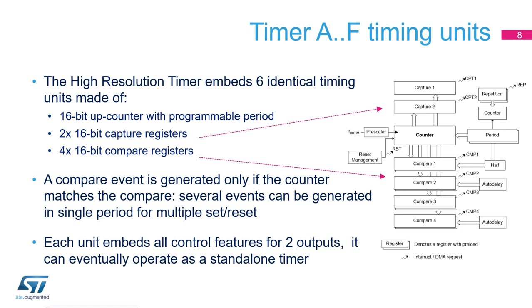Let's take a closer look at one of the high-resolution timer's five identical timing units. It is made of a 16-bit up-counter with a programmable overflow value to adjust the counting period. Four 16-bit compare units and two 16-bit capture units are linked to this counter, each with interrupt and DMA capability. A compare event is generated when the counter exactly matches the compare value. Several compare events can thus be generated during a single period to have the output set and reset multiple times per PWM cycle.